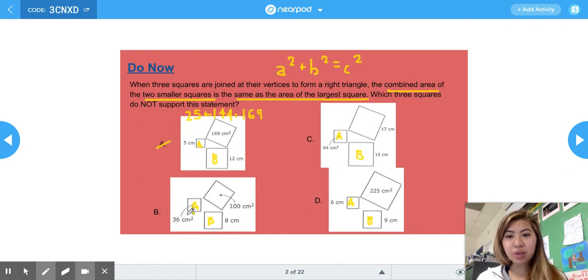For answer choice B, we have 36. So that's the area of square A. Plus we have 8, the 8 is the side length of square B. So to find B squared, we have to do 8 times 8, which is 64. And the area of C is 100. 36 plus 64 is 100. So this statement is supported.